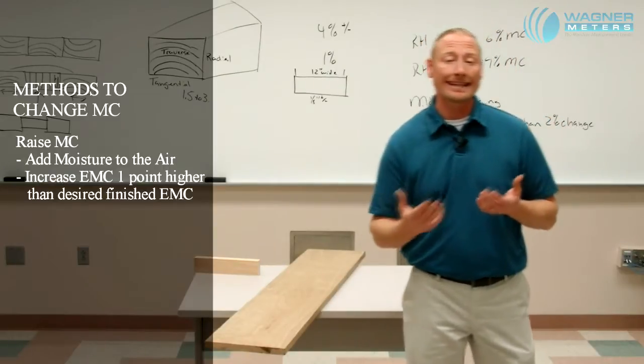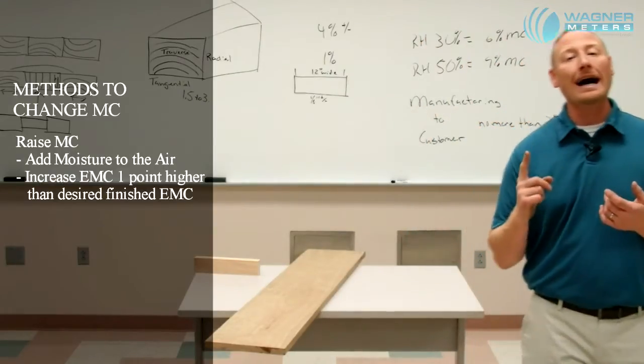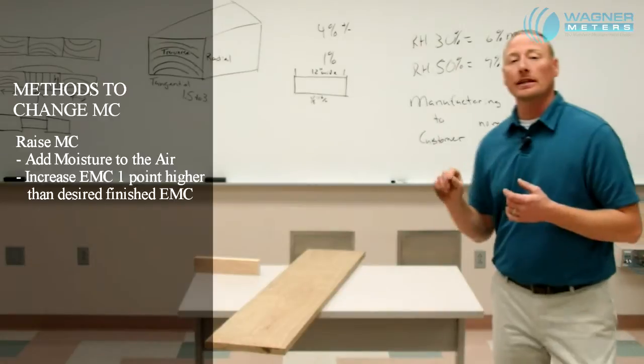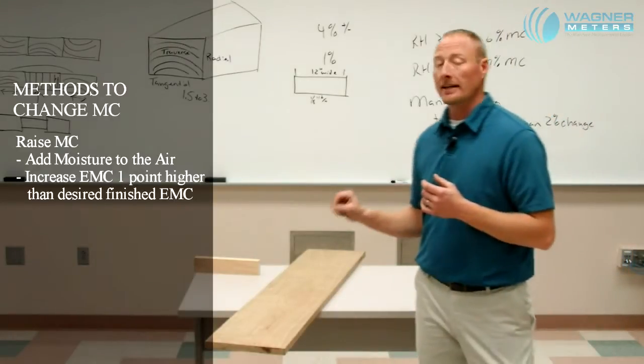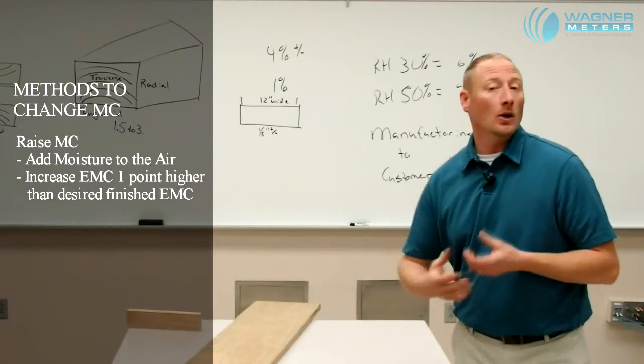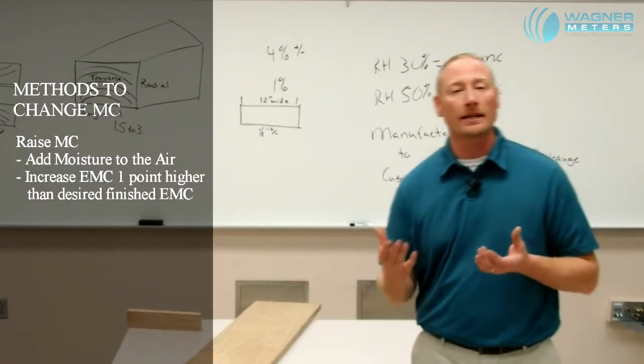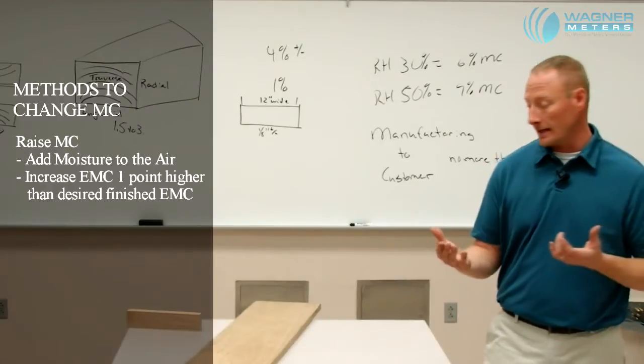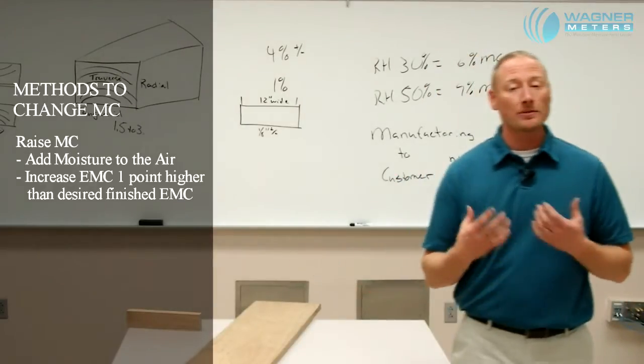General rule of thumb is to increase the EMC one point higher than the finished EMC or the desired finished EMC. So if we are at 6%, we want it to move to 8%, we would need to move or change the EMC of that room to 9%. This is not something that takes place overnight.